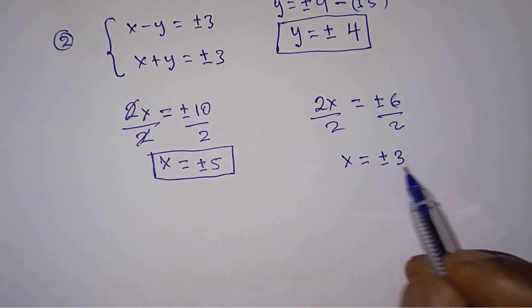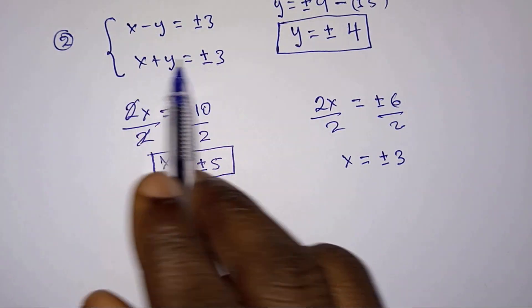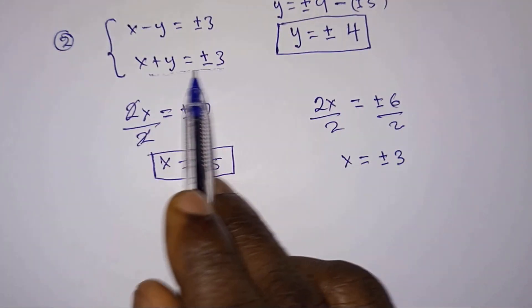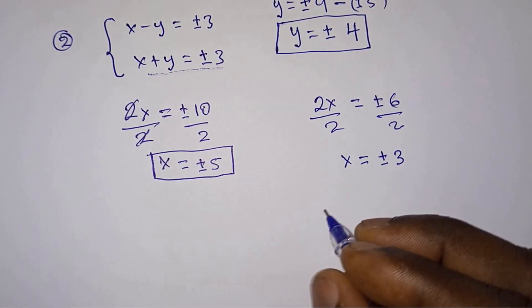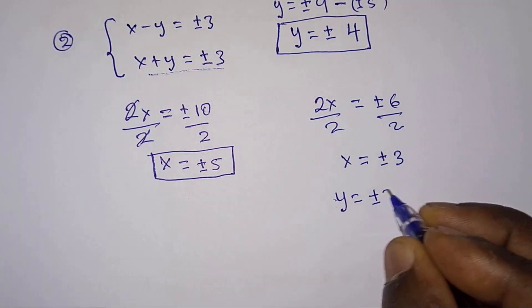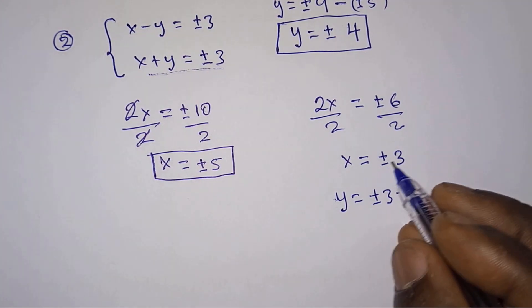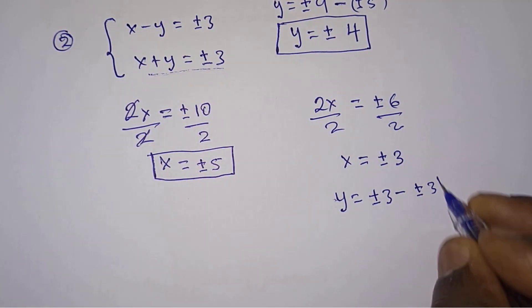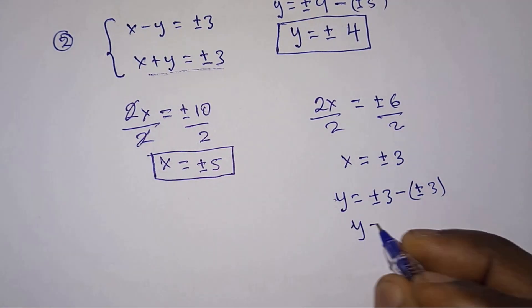Then let's put this value of x into any of the equations. I'm going for the second equation because it is easier to find y. So we will have y is equal to plus or minus 3 minus x, which is plus or minus 3, and everything gives us 0.